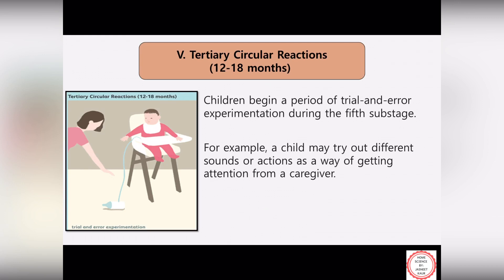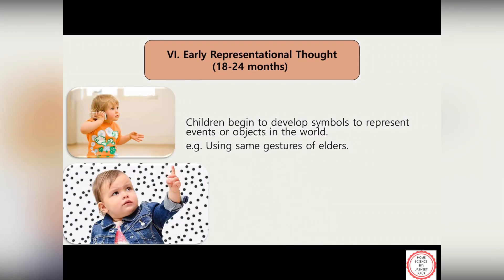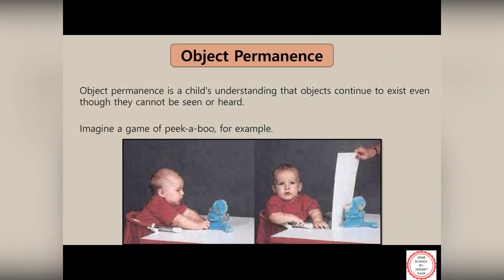The last, sixth sub-stage is early representational thought, between eighteen to twenty-four months. Now the children develop symbols to correlate events, objects, or people. For example, new gifts at home will represent the presence of guests, doctors will be associated with injections, and a watchman's whistle will be an indicator of midnight.